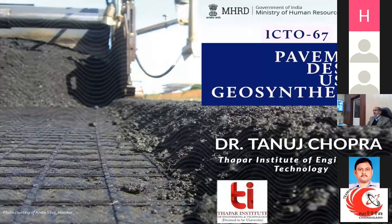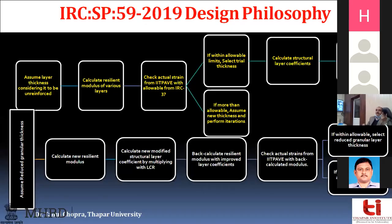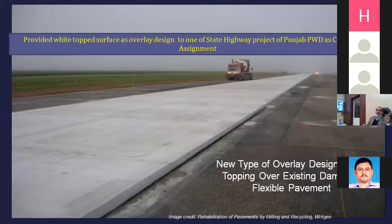The final target is to design the overlay. Similarly, we now also have highways with geosynthetics that need to be evaluated. The problems with conventional FWD analysis exist already, and with sections having SMA, modified binders, and geosynthetics, evaluation becomes even more challenging. Their design philosophies can be found in SP 59 for geosynthetics pavement design. Another concept we worked on was white-topping overlay design — recently the revised code came out. We did projects for PWD: evaluating existing flexible pavement and then designing white-topping over it as per IRC SP guidelines.